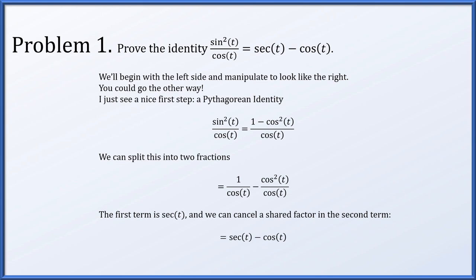Starting with the left hand side, doing one step at a time, always fully justified, we managed to see that it is exactly equal to the right hand side. So those two things are always equal.